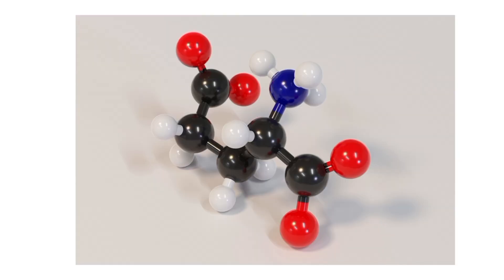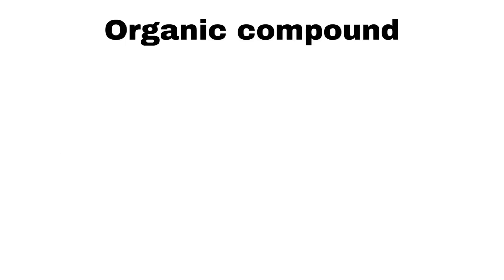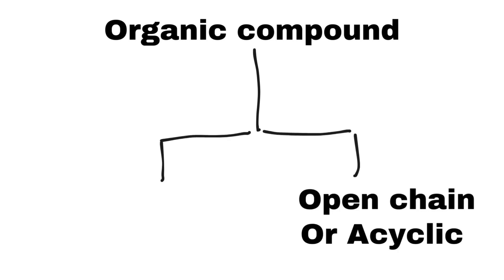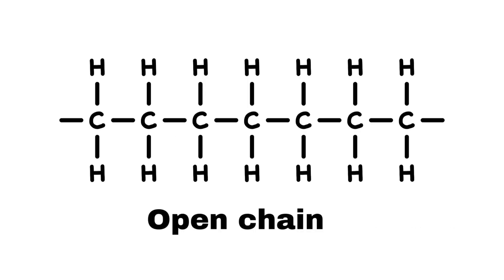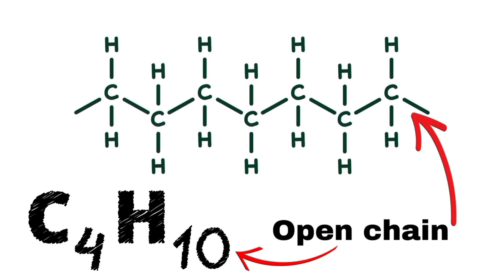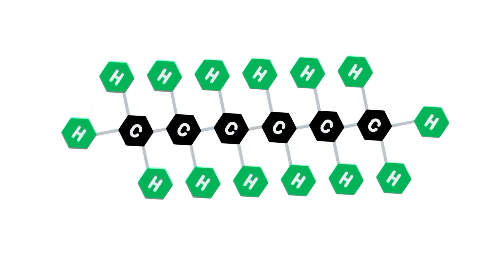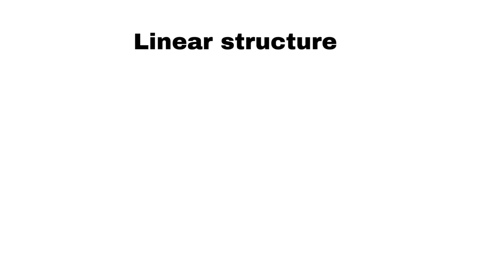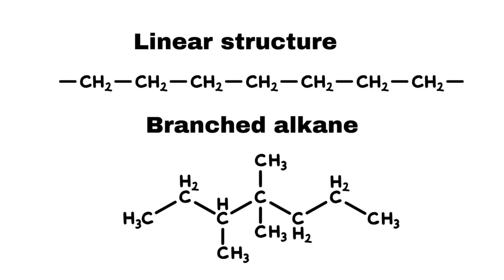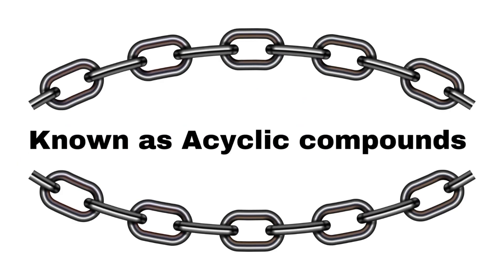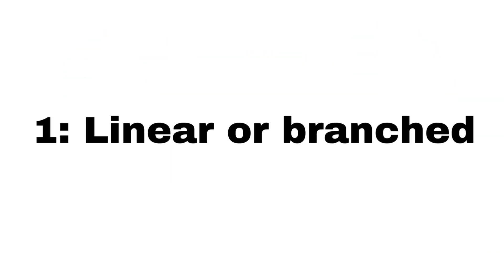Organic compounds are classified into two categories: open-chain or acyclic compounds, and closed-chain or cyclic compounds. Open-chain organic compounds are a type of organic molecule in which the carbon atoms are arranged in a linear or branched chain rather than forming a ring structure. These compounds are also known as acyclic compounds.